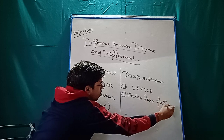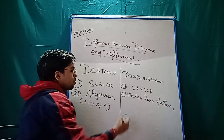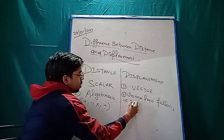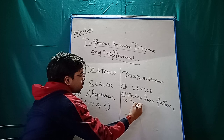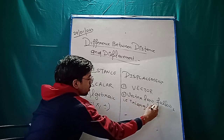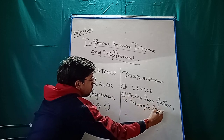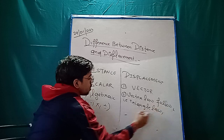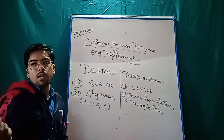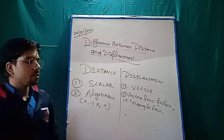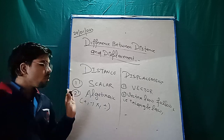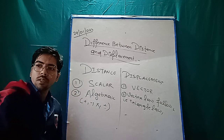For example, we follow the triangle law for vector addition. I also taught you the parallelogram law. Any other difference you can tell me about vectors?